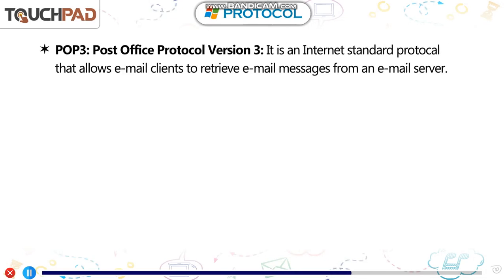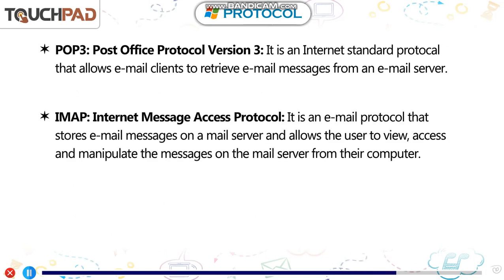POP3 – Post Office Protocol Version 3 – is an internet standard protocol that allows email clients to retrieve email messages from an email server. IMAP – Internet Message Access Protocol – is an email protocol that stores email messages on a mail server.